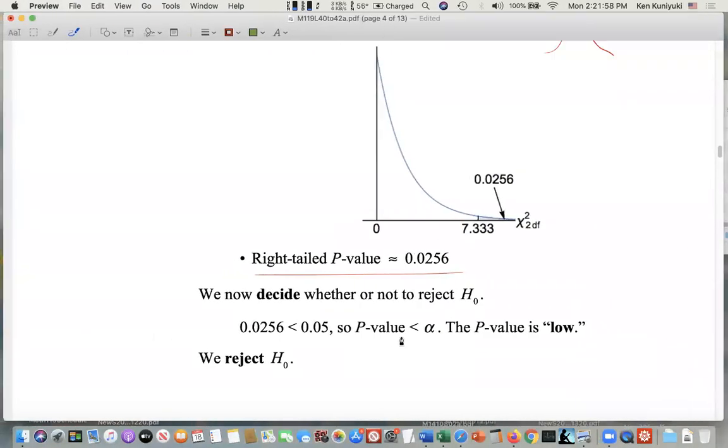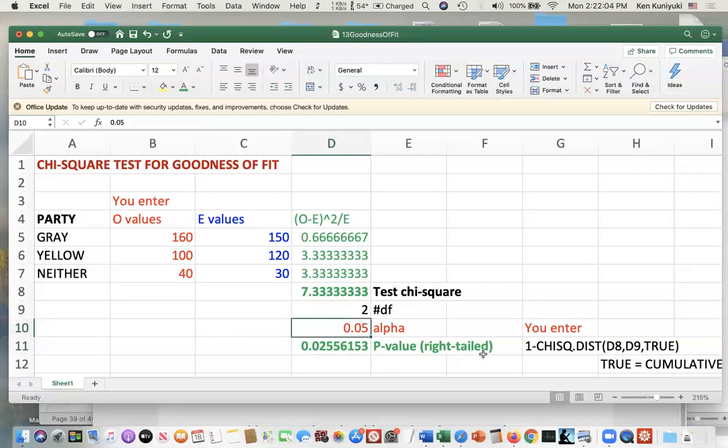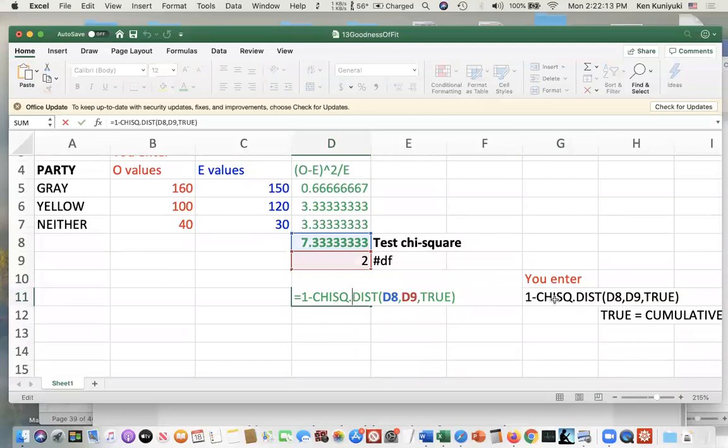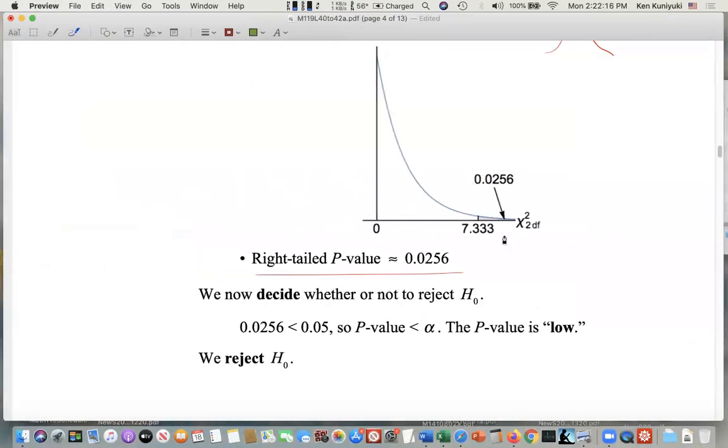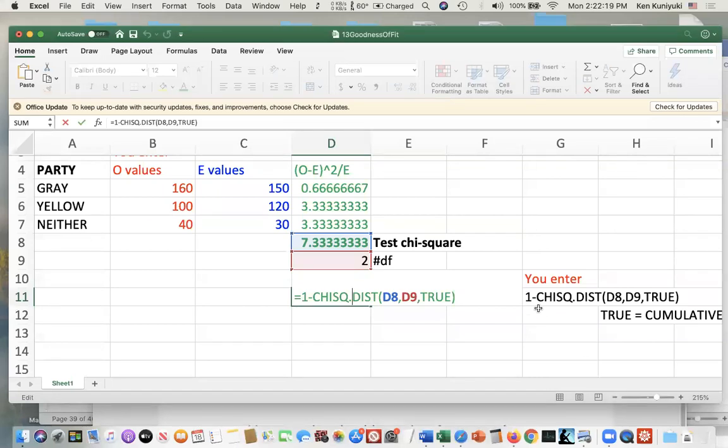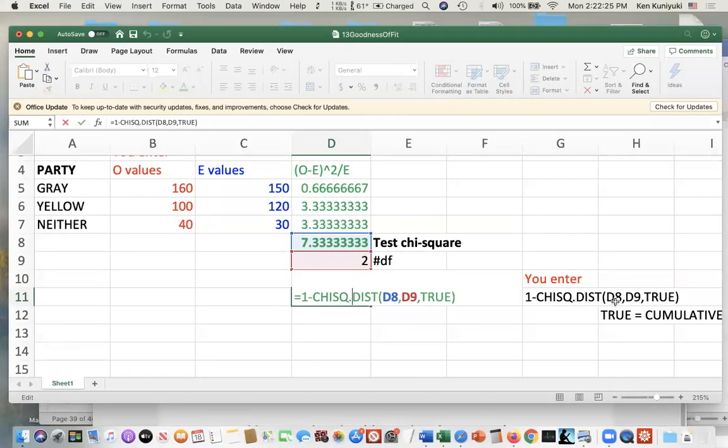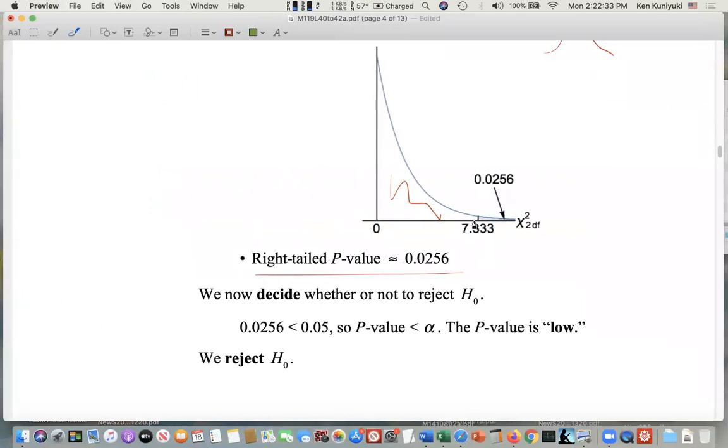That's the right tail p-value for this chi-square test value under two degrees of freedom. Alpha doesn't matter just yet. Later on, we'll compare to alpha. Now here, by the way, the Excel command, since it's a right tail probability, then it's a one minus deal. It's one minus the cumulative probability to the left, up to this value. D8 is the value, the chi-square value, 7.3 bar. D9 is the number of degrees of freedom. I put true because we want a cumulative probability, not the y-coordinate up here.